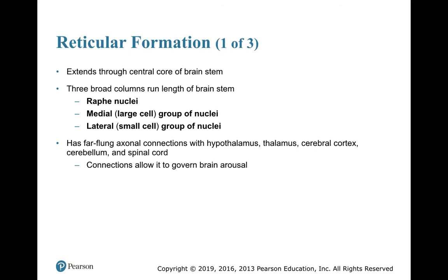The other system is the reticular formation. The reticular formation extends through the central core of the brain. It has three broad columns that run the length of the brain stem: the raphe nuclei, the medial group of nuclei, and the lateral group of nuclei. The medial ones are also called large cell and the lateral ones small cell.